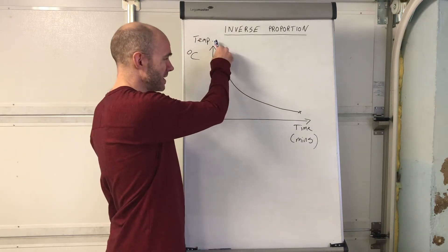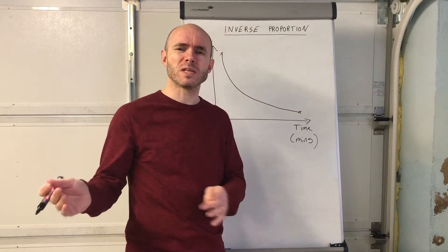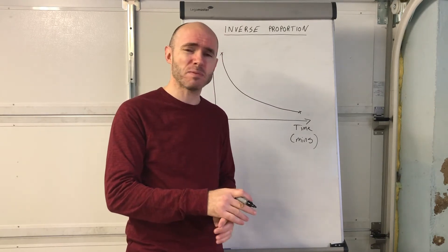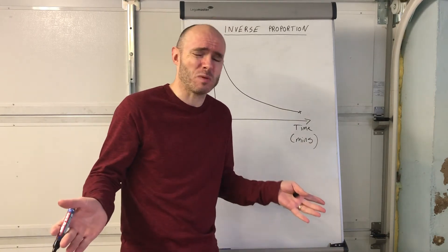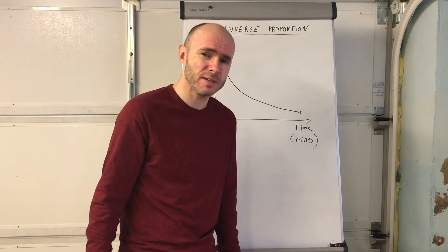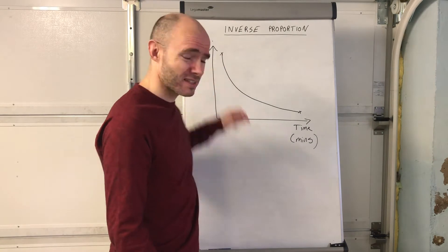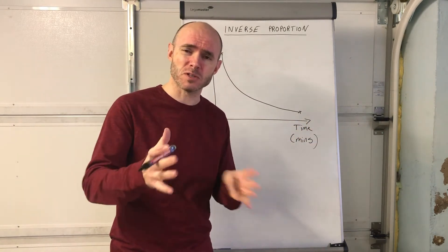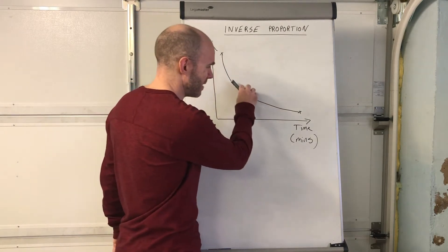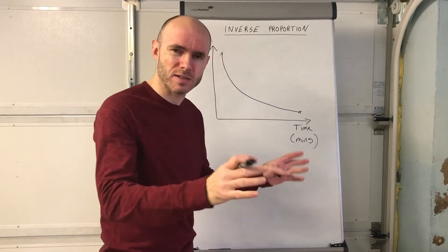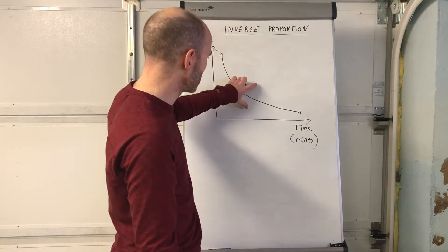The graph looks like this — not a straight line. The reason is the temperature decreases rapidly at first. It's 100 degrees when the water leaves the kettle, and the room temperature is nowhere near that — even on a hot summer's day it won't be more than 30 degrees. So the temperature drops rapidly, but then it starts to level off. As it gets closer and closer to the outside temperature, it levels off, and there's a slow decrease. So the graph looks like that.